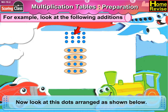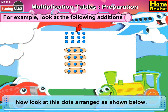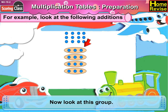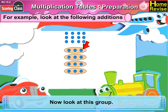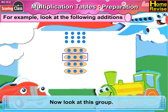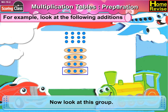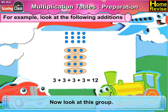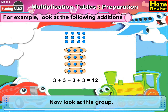Look at these dots arranged as shown below. Look at this group. If you notice, there are 4 sets of 3 dots. 3 plus 3 plus 3 plus 3 is equal to 12.